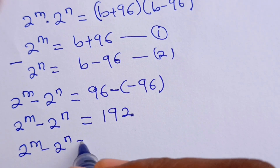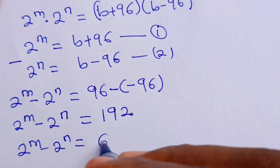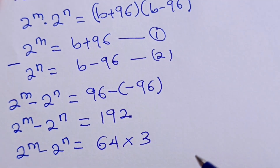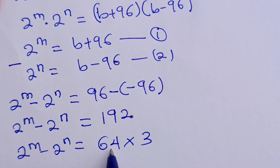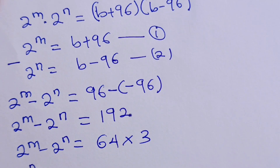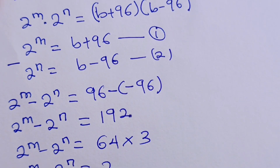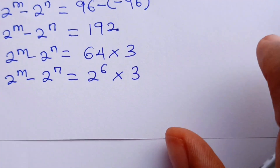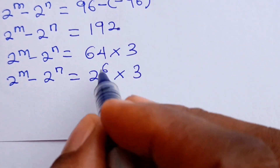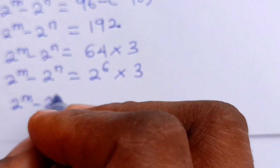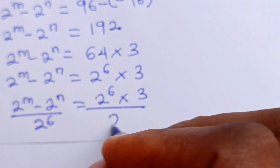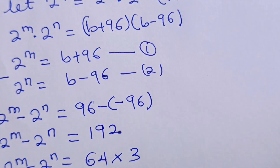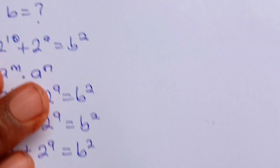So, 2 to the power of M minus 2 to the power of N is equal to 192. Now, 192 can be expressed as 64 multiplied by 3. To make this easier, let's express 64 as 2 to the power of 6. So we have 2 to the power of M minus 2 to the power of N is equal to 2 to the power of 6 multiplied by 3. Now let's divide both sides by 2 to the power of 6.